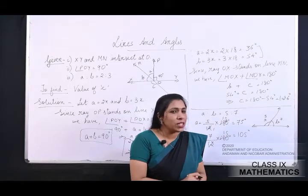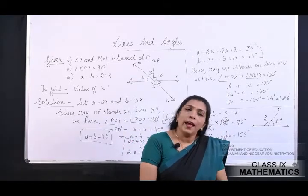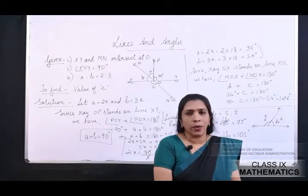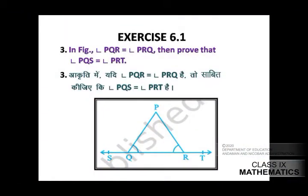So children, there are two methods to find the value of A and B. Once you get A and B, with the help of B you can find C. I hope this question is clear. Ab chalte hain next question ki or.